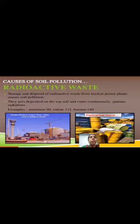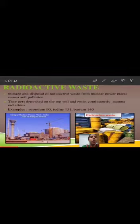Radioactive waste. Storage and disposal of radioactive waste from nuclear power plants causes soil pollution. They get deposited on the topsoil and emit continuous gamma radiation. Examples: strontium-90, iodine-131, and barium-140.